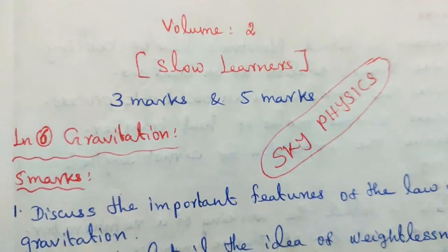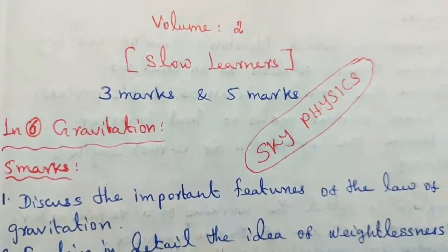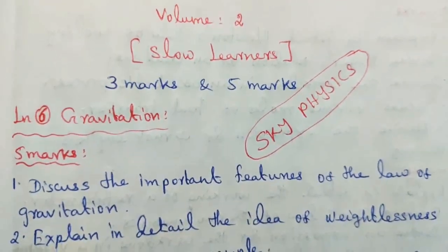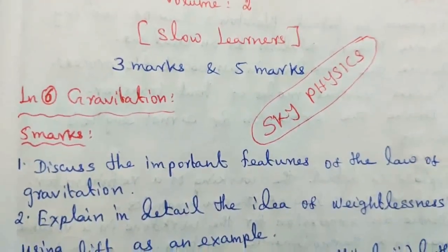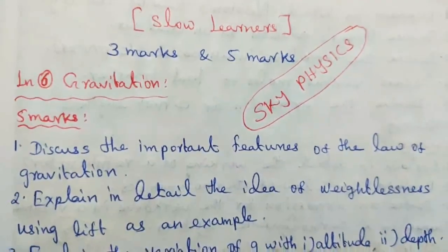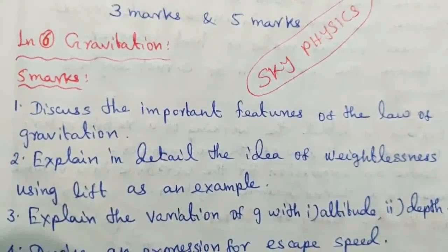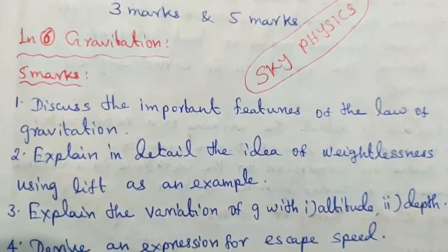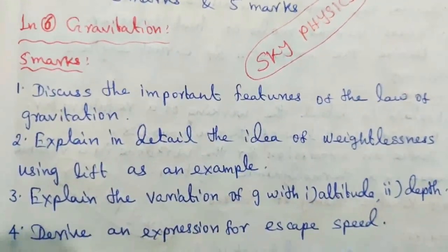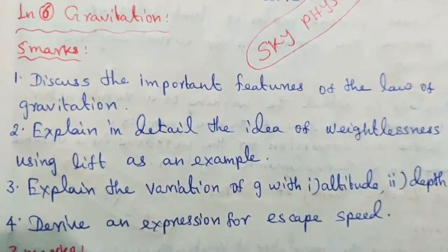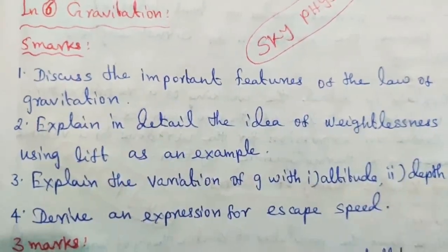First question: Discuss the important features of the law of gravitation. Second question: Explain in detail the idea of weightlessness using lift as an example. Question number 3: Explain the variation of G with altitude, depth. And fourth one: Derive an expression for escape speed.